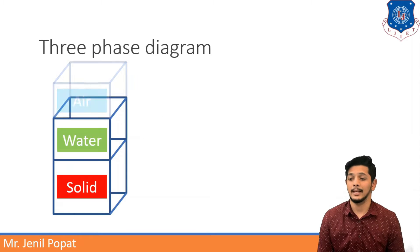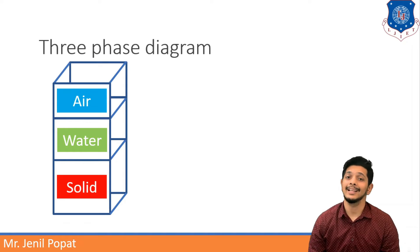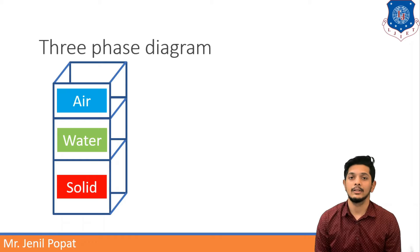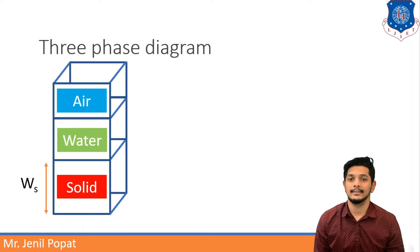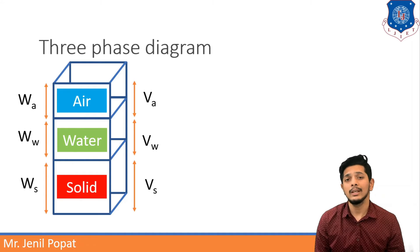Let us now understand the three-phase diagram. Soils have different index properties. To understand these index properties, we go through the three-phase diagram of soil. If we take any soil sample in its natural state, there will be three phases. Ws means weight of solid particles, Ww means weight of water, and Wa means weight of air. Similarly, Vs is volume of solids, Vw is volume of water, and Va is volume of air. We can easily measure the weight and volume of any soil sample and then derive the index properties.